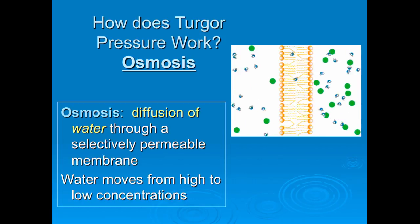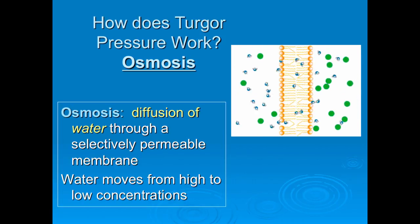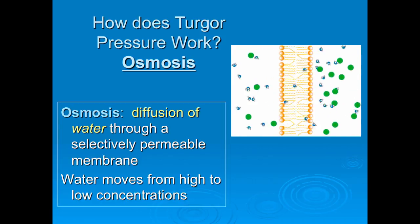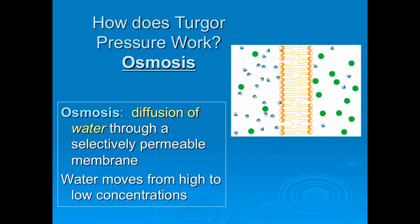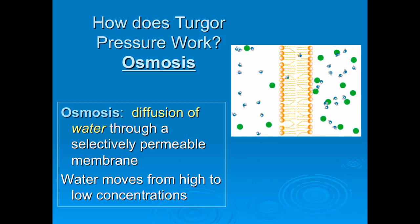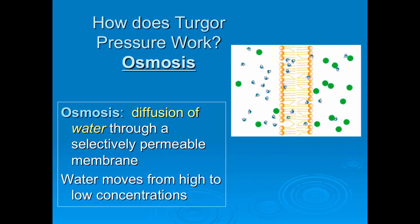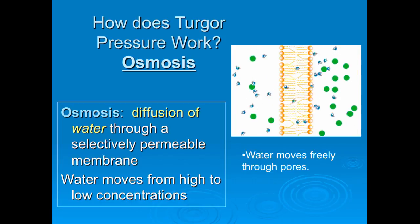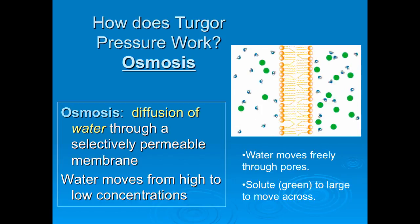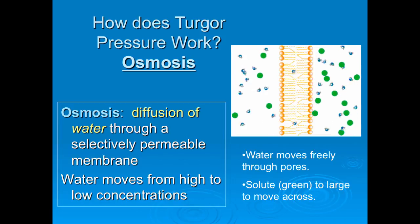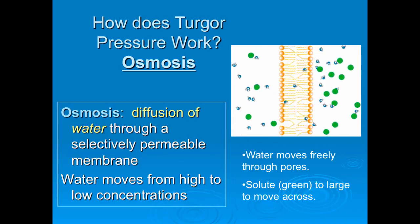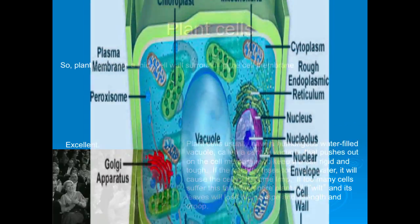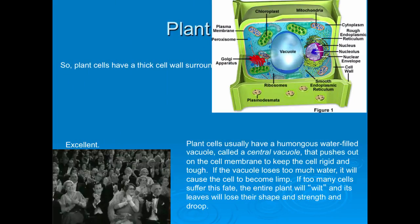How does this work with turgor pressure? Water is always going to move from an area of high concentration to an area of low concentration. I would love it if you paused the video and drew this picture because it's really going to help you. Water moves freely through the pores, and the solutes — the green ones — can move across.